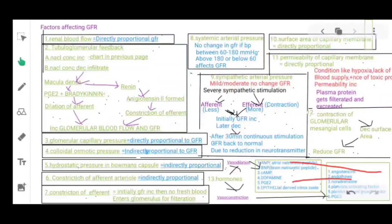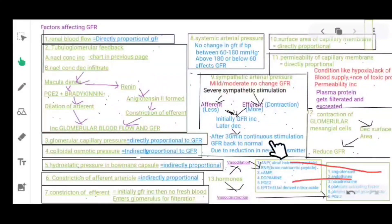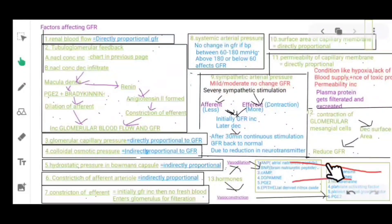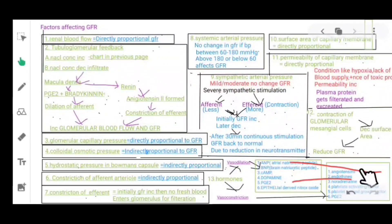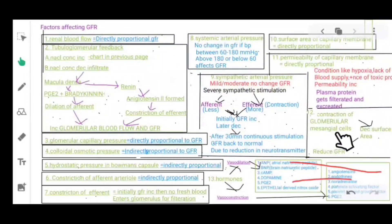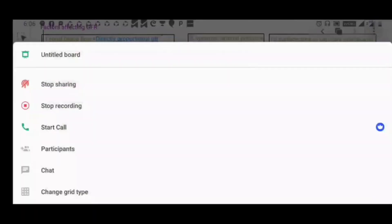Thirteenth: hormones — there are two types affecting GFR: vasodilators and vasoconstrictors. Vasodilation is performed by ANP, BNP, dopamine, prostaglandin E2, and endothelial-derived nitric oxide. Vasoconstriction is done by angiotensin 2, noradrenaline, platelet activating factor, platelet-derived growth factor, and prostaglandin F2. This is where we end this topic.